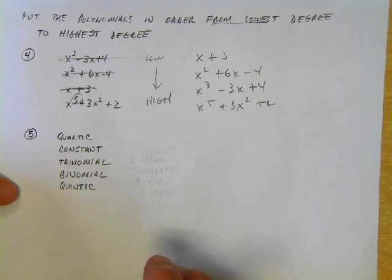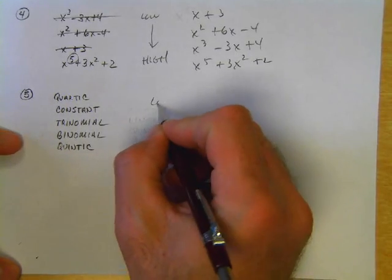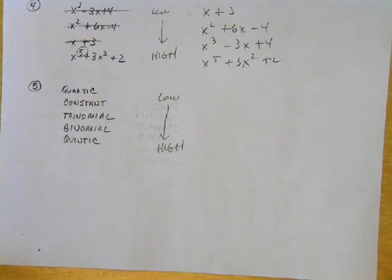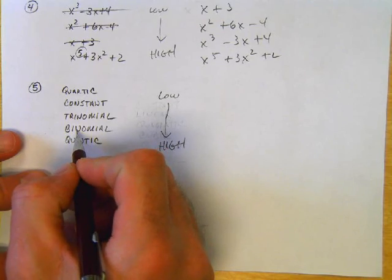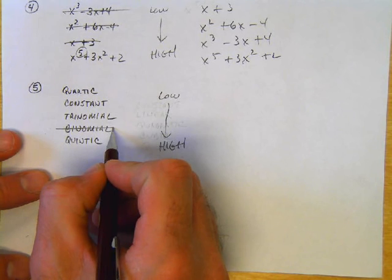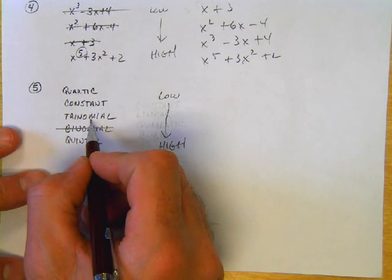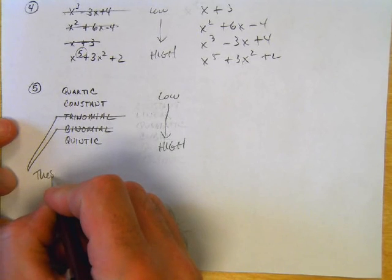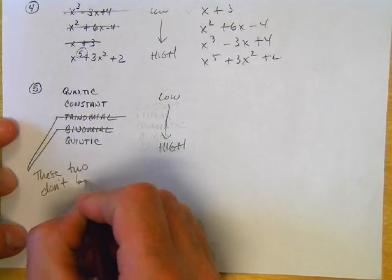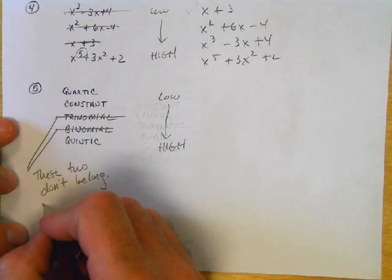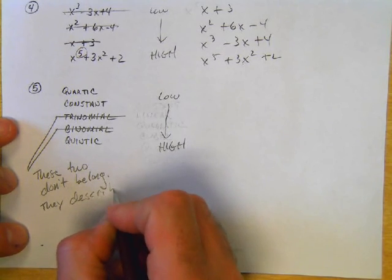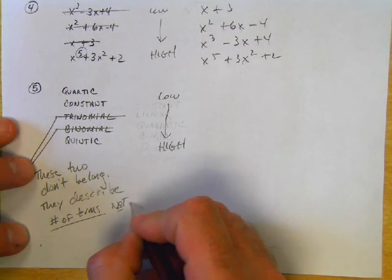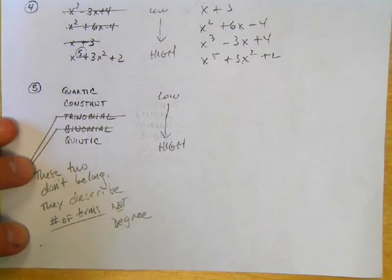Now, this next problem, degree from low to high. I'm looking at these vocabulary words. Does binomial have anything to do with degree? No, binomial is number of terms. How about trinomial? Yeah, that's number of terms. So really, these two terms don't belong.